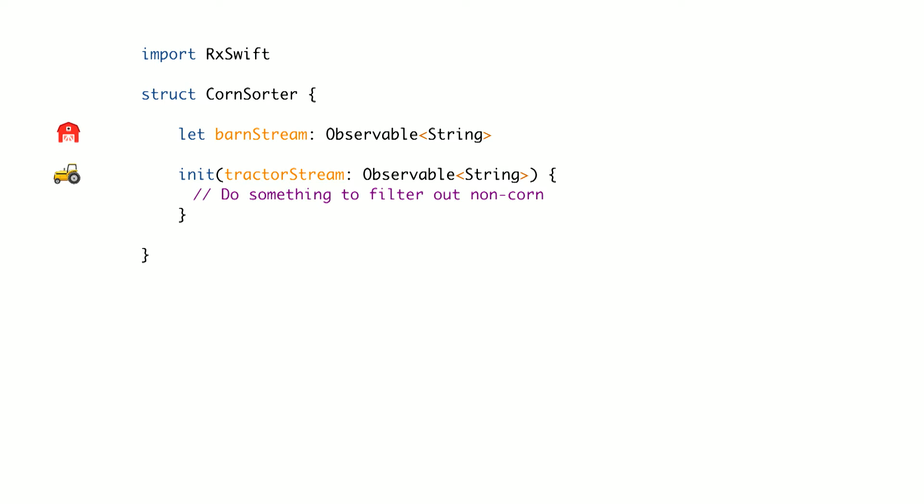We're going to do that with a struct called a corn sorter, and it is going to filter out anything that is not corn. So we have a struct — hopefully a familiar object for those who write Swift. The struct is initialized with that tractor stream, the stream of events coming from the tractor. And then it exposes a property which is the barn stream. You can see in the syntax it's an observable of type string. Observable is the same as arrays — you declare what type you expect to receive through them. Then we have some gaps where we'll first write our test, and then make it pass.